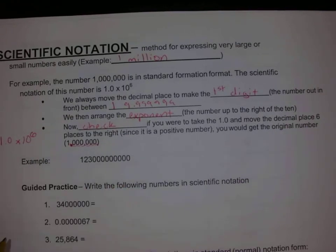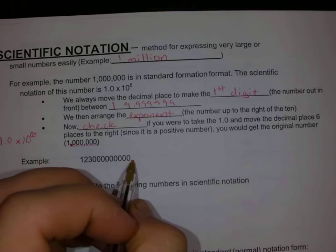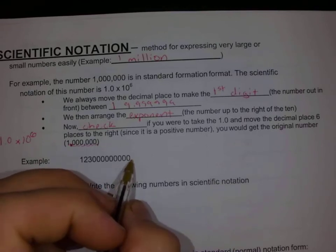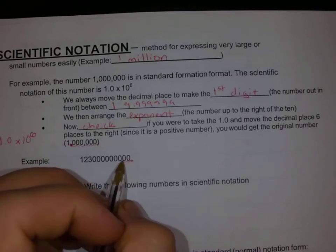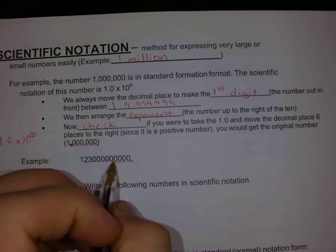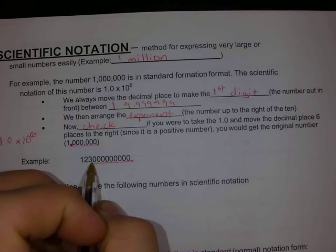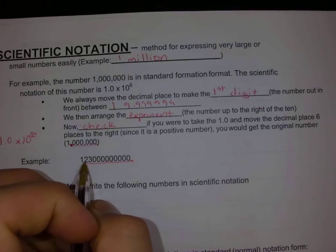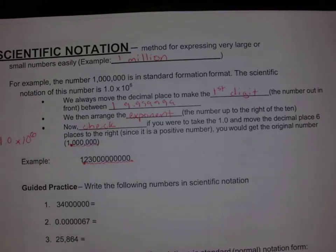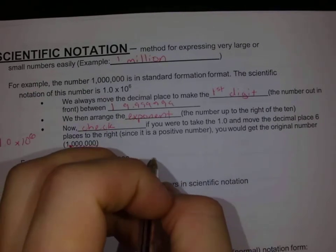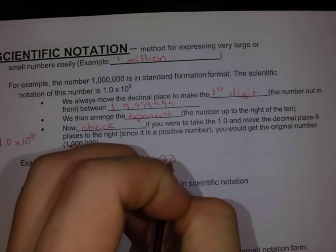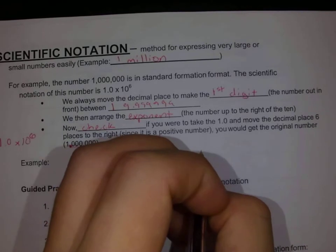Let's go through another example. My decimal place is here; I've got to move it all the way over — 1, 2, 3, 4, 5, 6, 7, 8, 9 — I've still got digits, keep going — 10, 11. Now I have only one digit before the decimal place. So this is going to be 1.23 times 10 to the 11th.